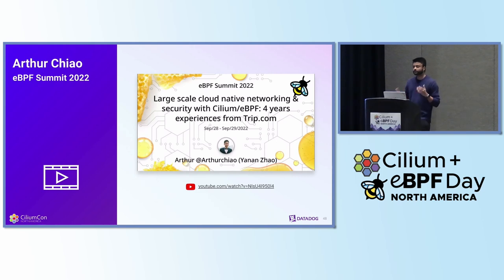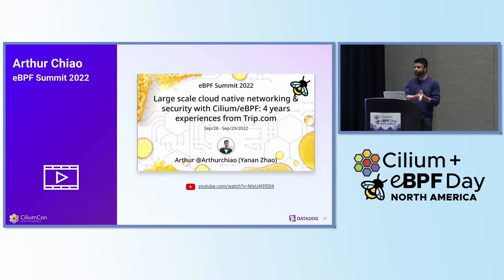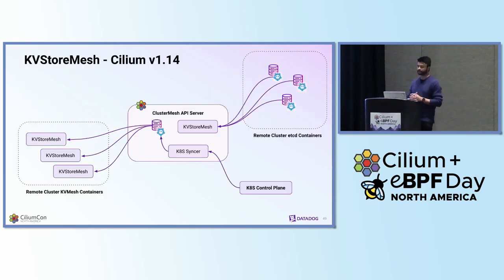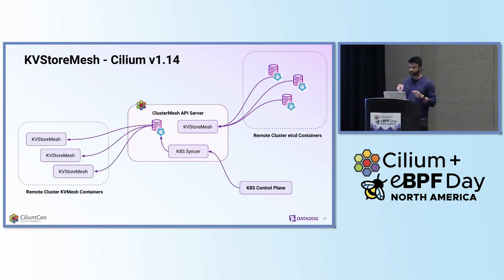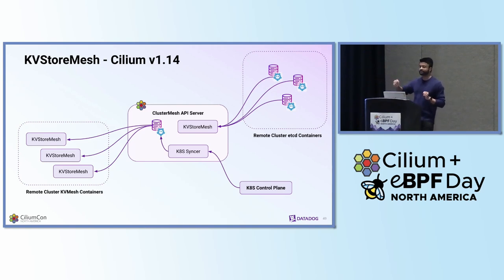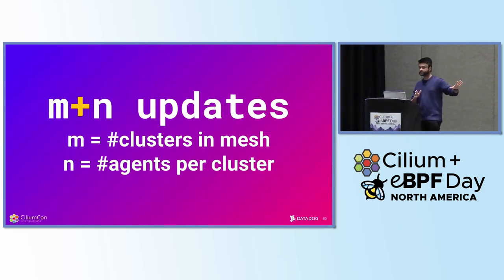At eBPF Summit 2022, Arthur from ctrip.com rightly pointed out: what if we had a controller that connected to remote etcds, discovered all of that data, and made it available locally so that all local agents can discover information from that? Fast forward to Cilium 1.14, a new mode called KVStore mesh implemented this architecture. A new component called KVStore mesh within the cluster mesh API server connects to remote etcd clusters, reads that information, and makes it available to your local etcd. With this architecture, you went from M×N updates to M+N updates, because instead of having all remote agents connecting to your etcd, you only have one connection per remote cluster.